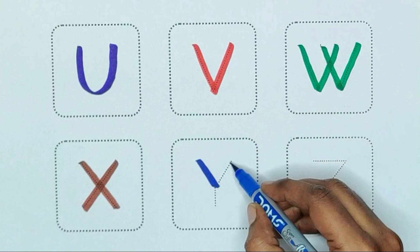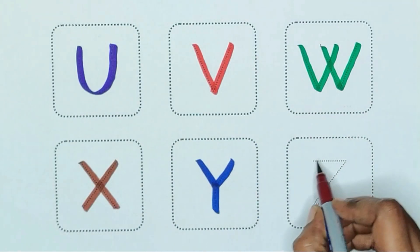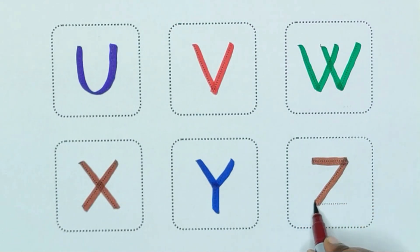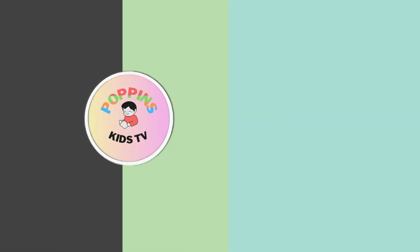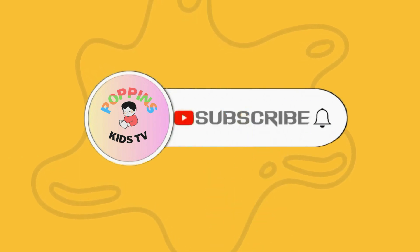Blue color, Y, Y for yacht. Brown color, Z, Z for zebra. Thank you for watching kids. Subscribe my channel. Bye.